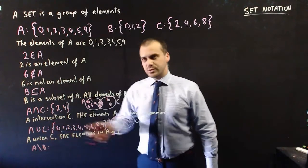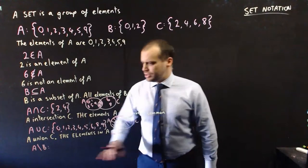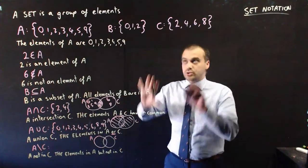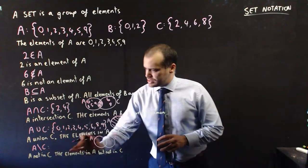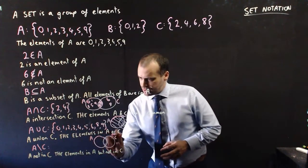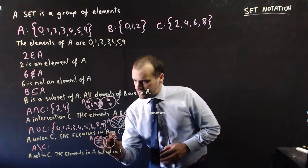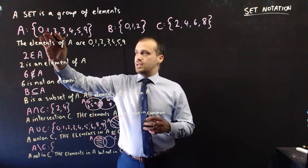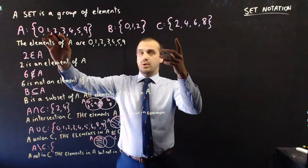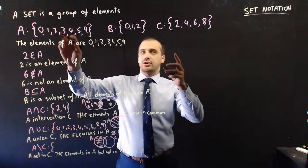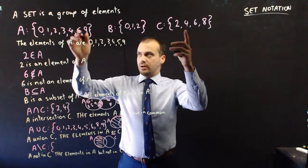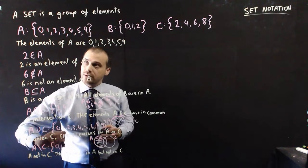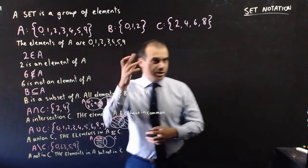This little backslash means 'not.' Let's do A not C — elements in A but not in C, so A but not this middle overlapping section. 0 is in A but not in C, 1 as well. 2 is in both, so we don't include 2. 3 is only in A — include that. 4 is in both — don't include that. 5 is only in A. 9 is only in A. So it's 0, 1, 3, 5, and 9 — in A but not in C.